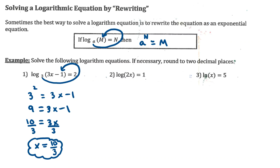If you were to plug that back into the original equation, you'd see that the left-hand side becomes log base three of nine. And log base three of nine is exactly equal to two because the power of three that gives you nine is two. Let's go ahead and solve another one.